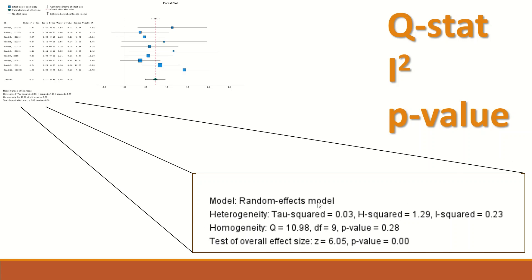The model used is a random effects model. The heterogeneity test produced a tau² value, an H² value, and an I² value equal to 23%. The homogeneity test was performed based on the Q statistic and degrees of freedom with a p-value greater than 0.05. From this, we can conclude with confidence that there is a low level of heterogeneity among the results extracted from several independent research studies.